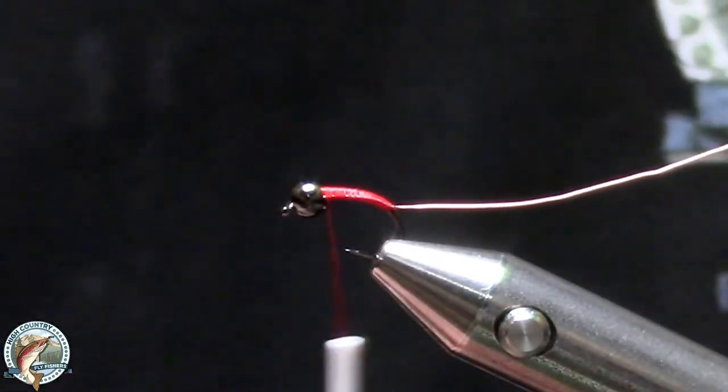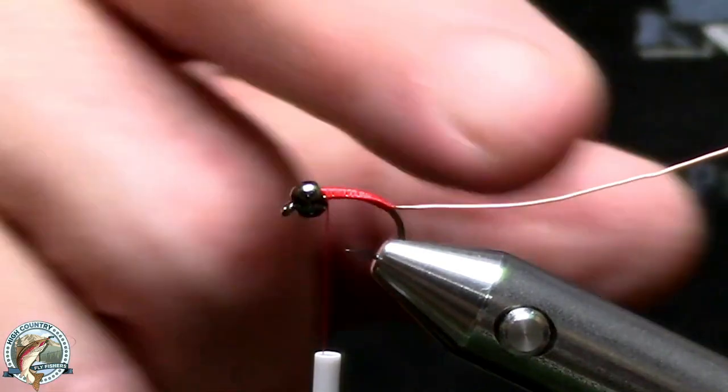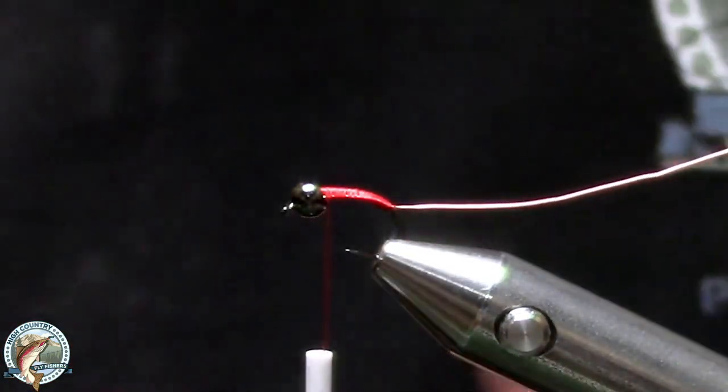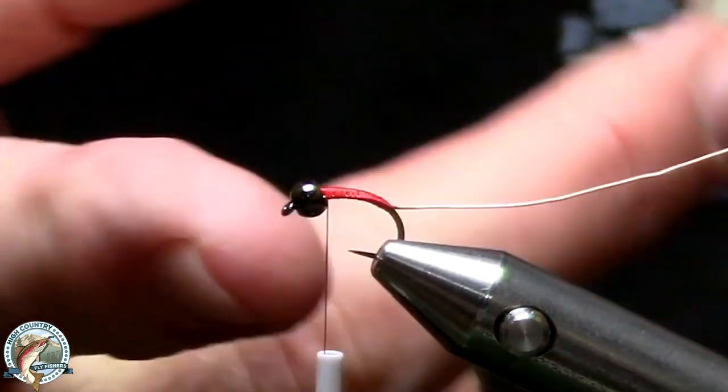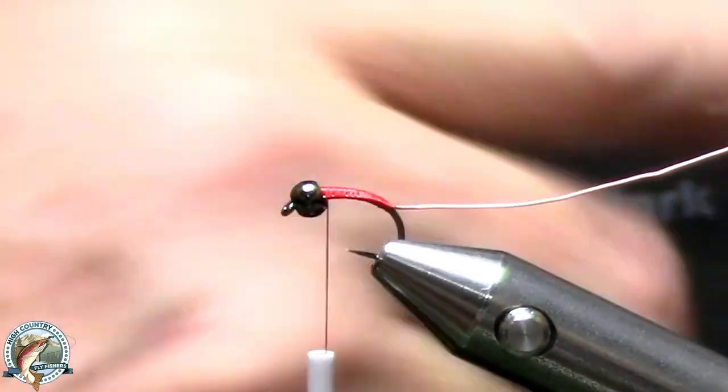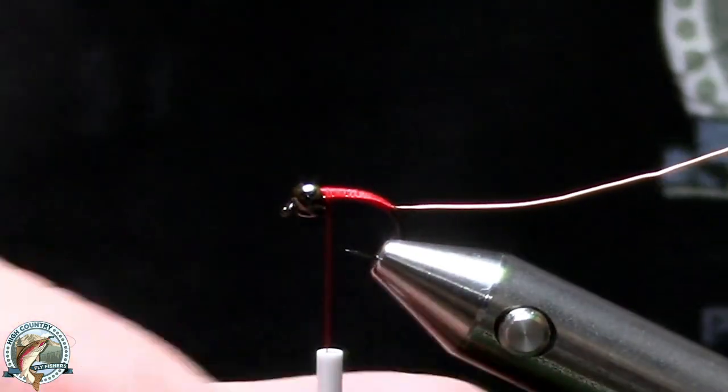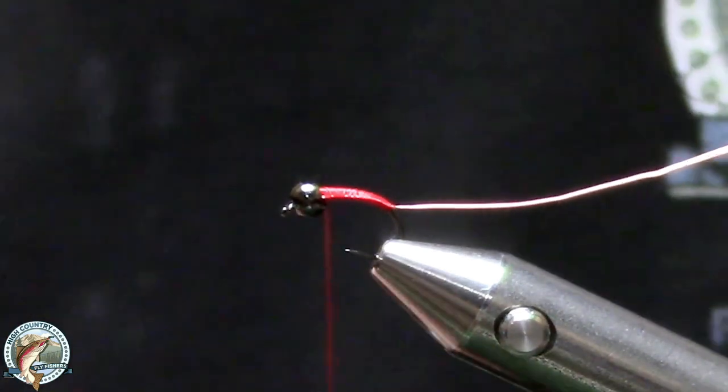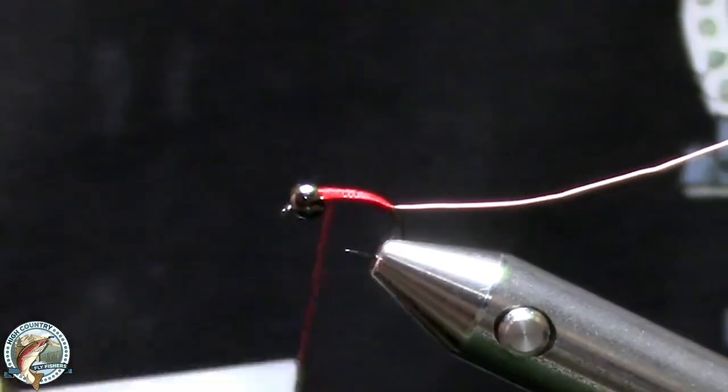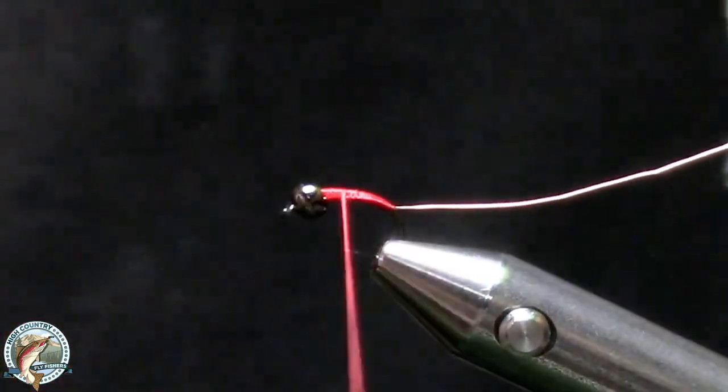Now here's what we're going to do. We need to create a taper. Right now you can see that my body of my fly is pretty uniform all the way up. So I'm going to flatten out my thread and I'm going to come down three-quarters of the way.